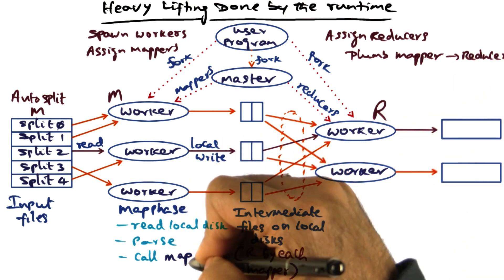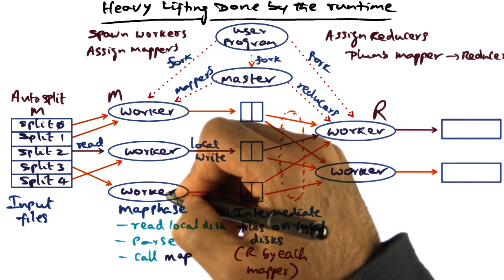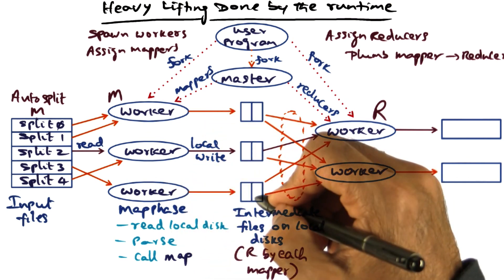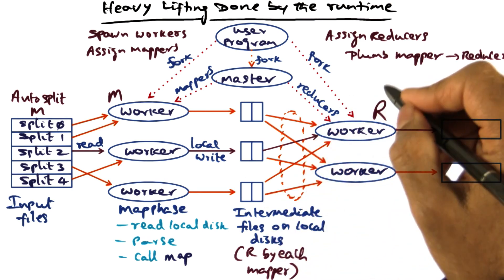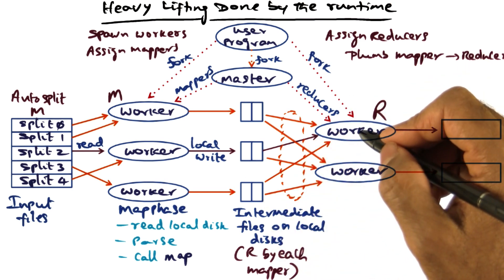each worker, meaning each map function that is associated with that worker, is going to produce R intermediate files, one for each of the R workers that are going to be doing the reduce operation.